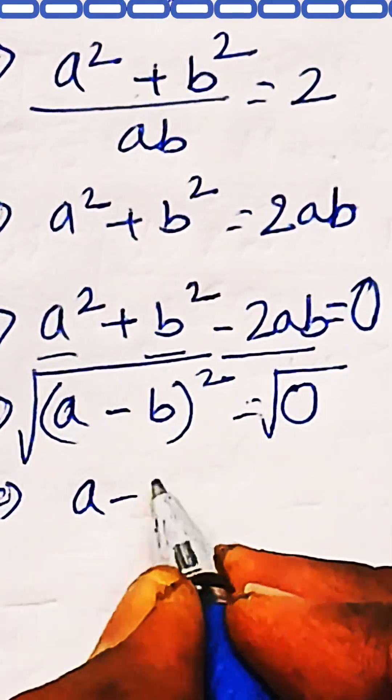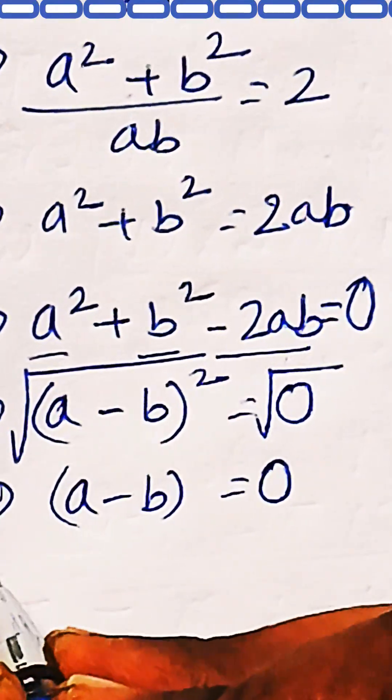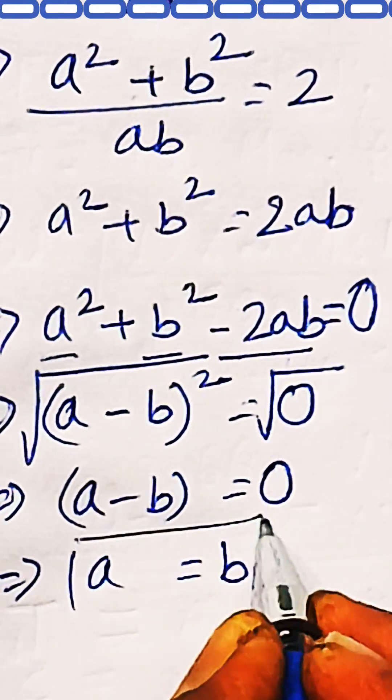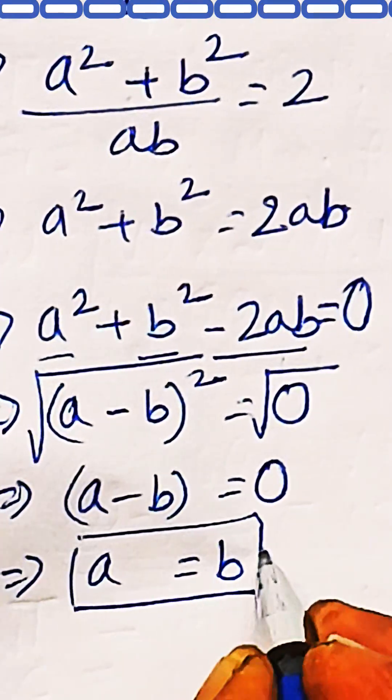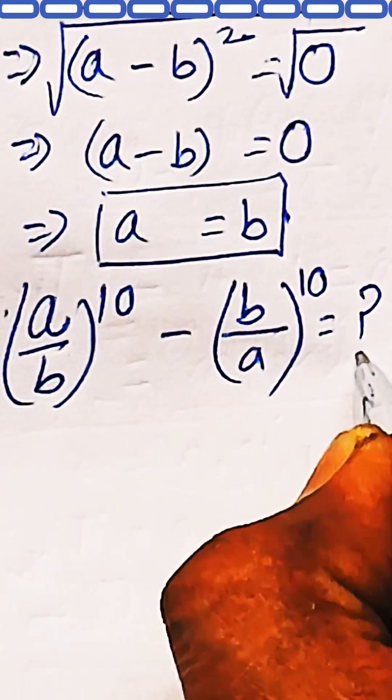Now take a square root on both sides of the equation. We get (a minus b) on the left-hand side and 0 on the right-hand side, which gives you a equals b. This is the relation which we have derived.